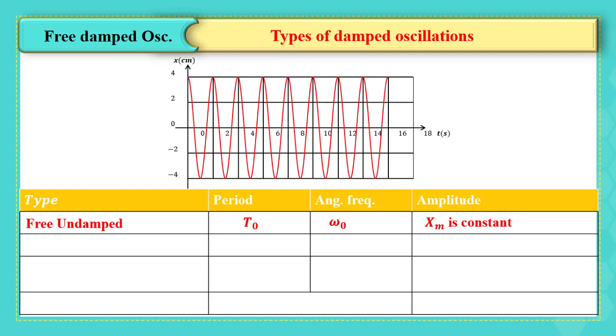The first type is slightly damping. In this case, the period is approximately equal to T0, where omega also is approximately equals to omega zero. We say that the amplitude decreases gradually with time.